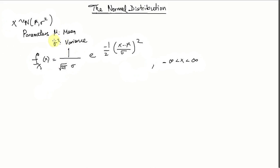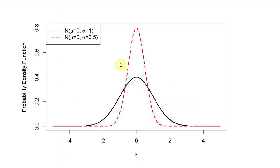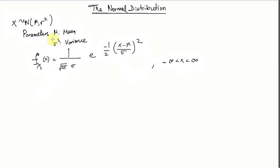A change in sigma squared changes the shape of the probability density function. This plot has two probability density functions. The only difference between these two is the black line has variance equals 1 and the red dotted line has variance equals 0.5 squared. A change in sigma changes the shape of the probability density function.